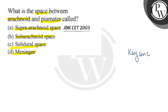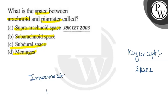The key concept of this question is the space present between arachnoid and pia mater. Pia mater is the innermost membrane of the brain, and arachnoid is the middle membrane.